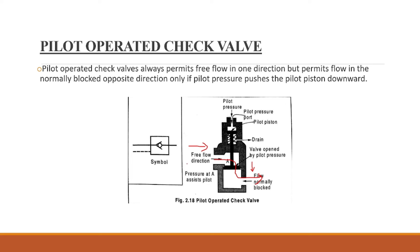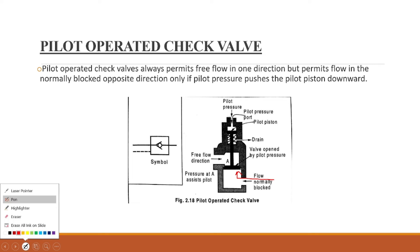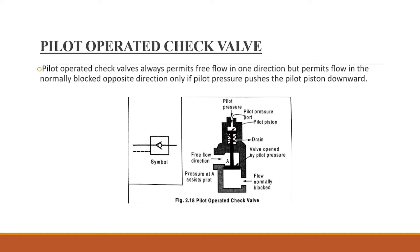In the free flow direction, the check valve allows flow. Flow is not allowed in the opposite direction unless pilot pressure is applied. When pilot pressure is applied, the piston is pushed, which opens the poppet and permits flow in the opposite direction. Without pilot pressure, the check valve blocks reverse flow.